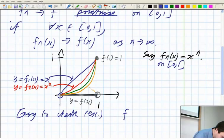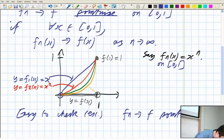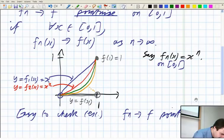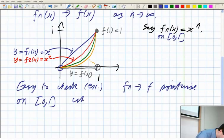So, it's easy to check. You can figure out the details. That Fn tends to F pointwise on [0,1]. Where F(x) is 0 if x is in the half-open interval [0,1) and 1 if x equals 1.